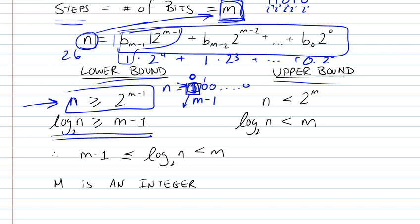So now we have our lower bound. For the upper bound of n, we have that n cannot be larger than or equal to 2 to the m.